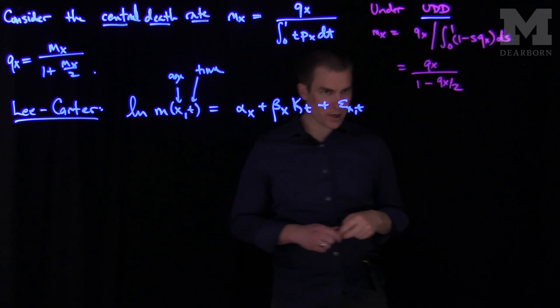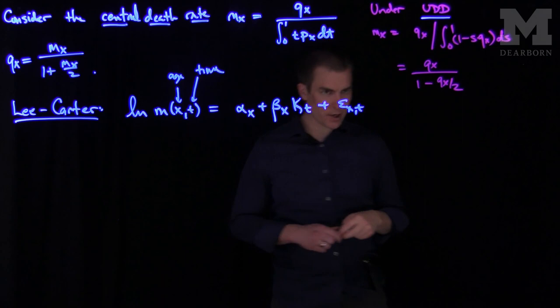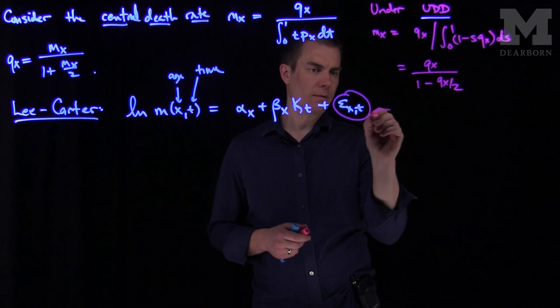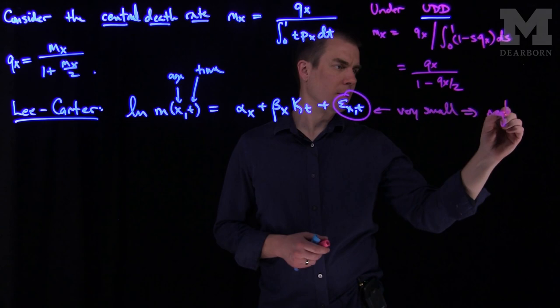Epsilon x and t. In most applications of the Lee-Carter model, this epsilon x t is small enough to neglect. Very small. And so what we'll do is we'll neglect this term in our analysis of the Lee-Carter model.